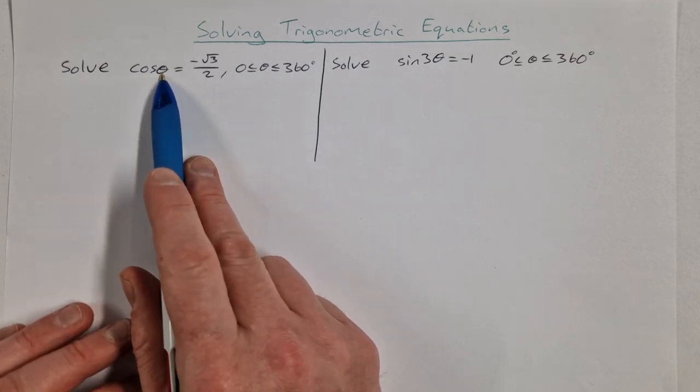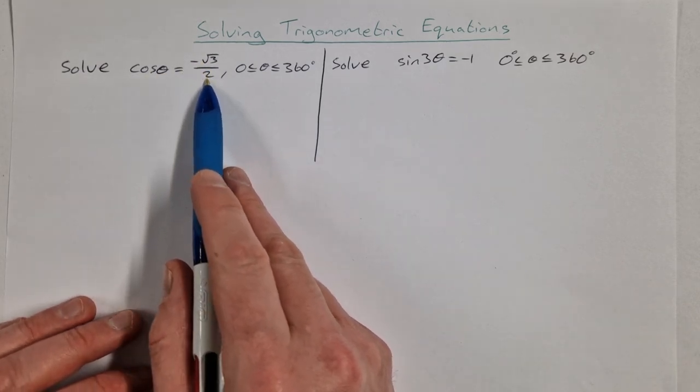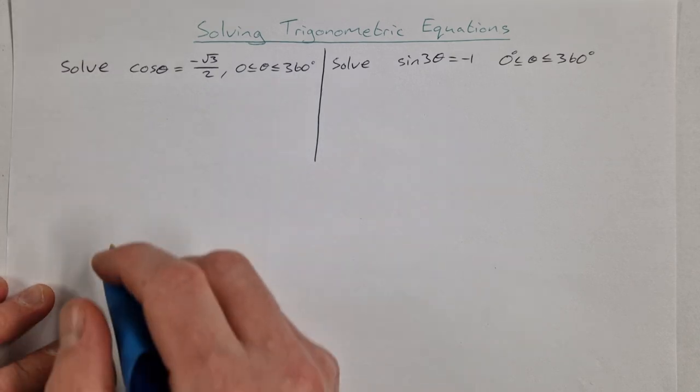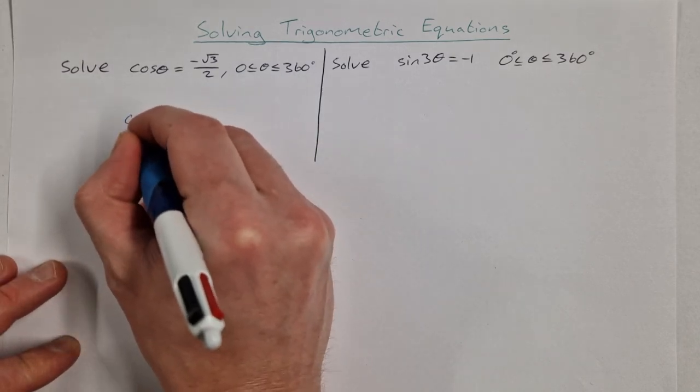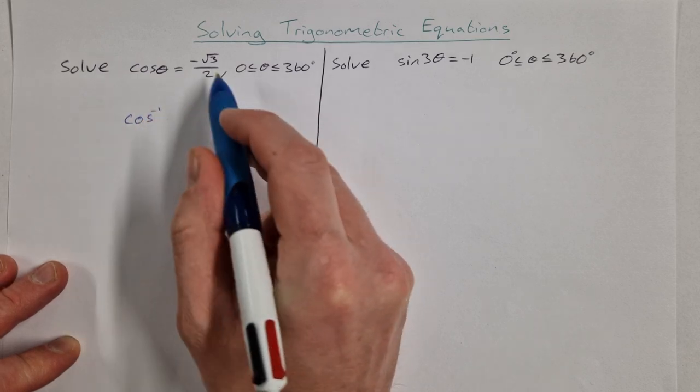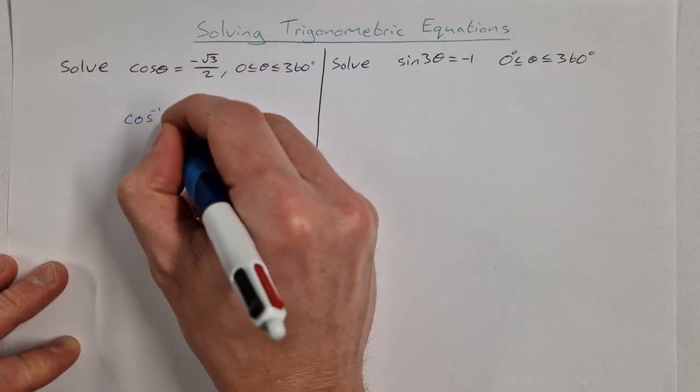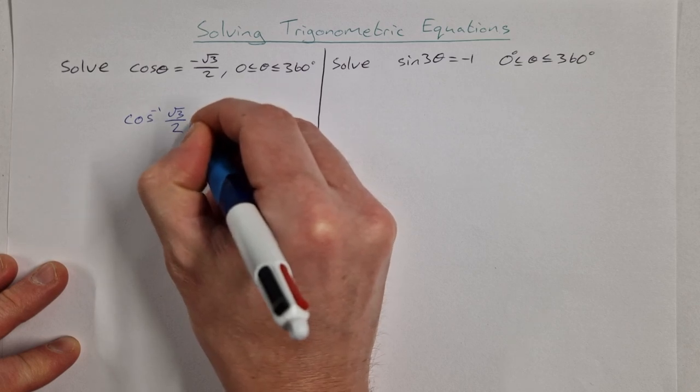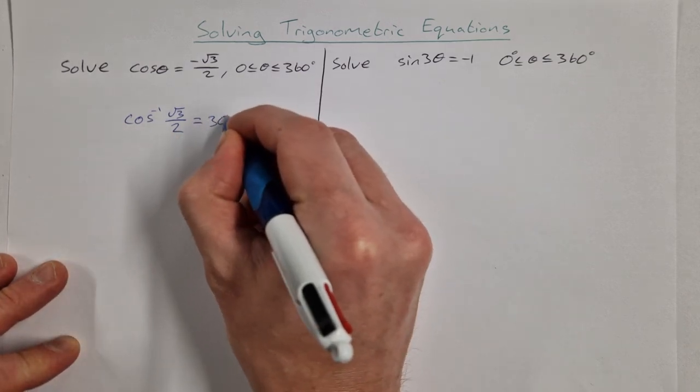So the first one is cos theta equals minus root 3 over 2. Theta is between 0 and 360 degrees. So the way we go about doing this is we get cos inverse of the positive root 3 over 2. You might know this one or you might look it up on your calculator. That's equal to 30 degrees.